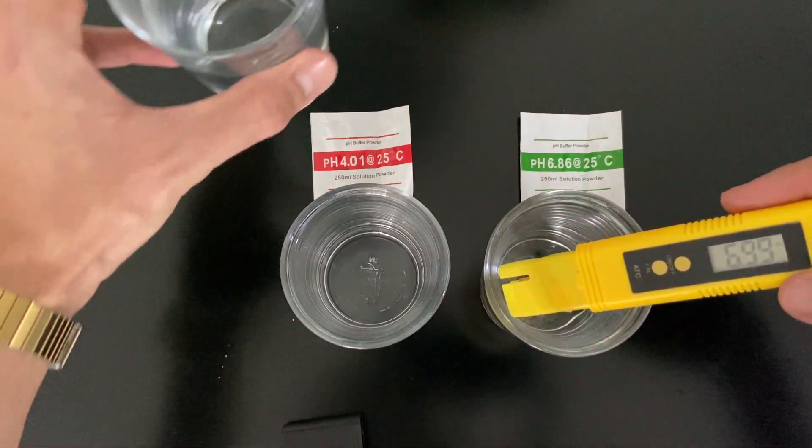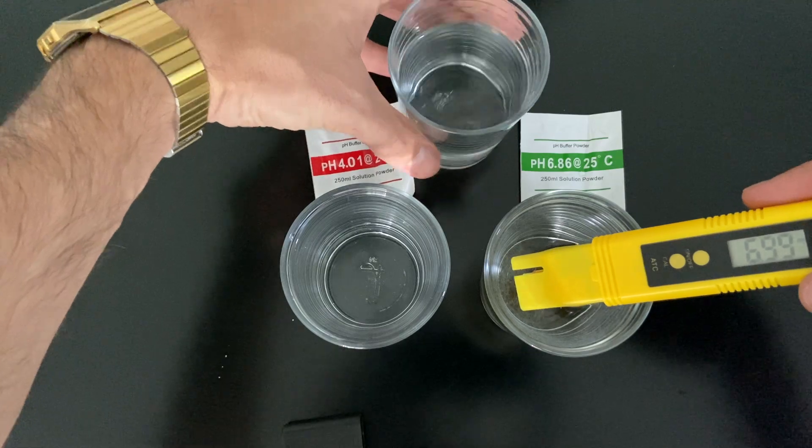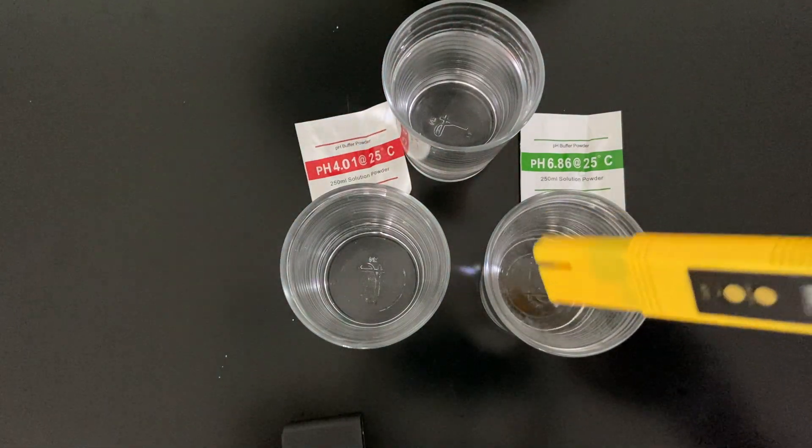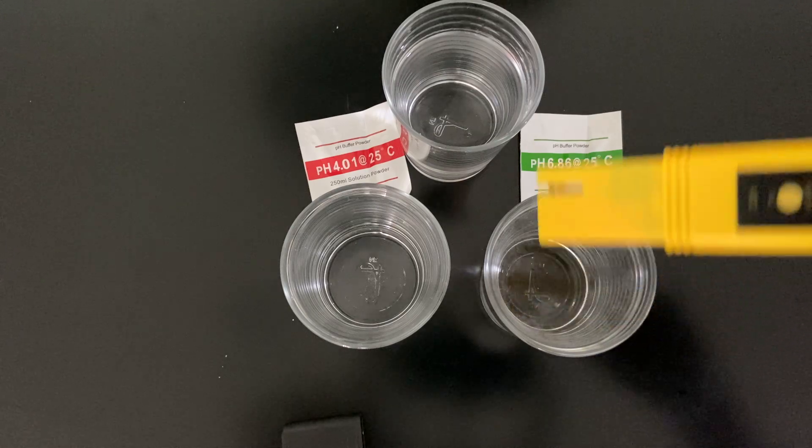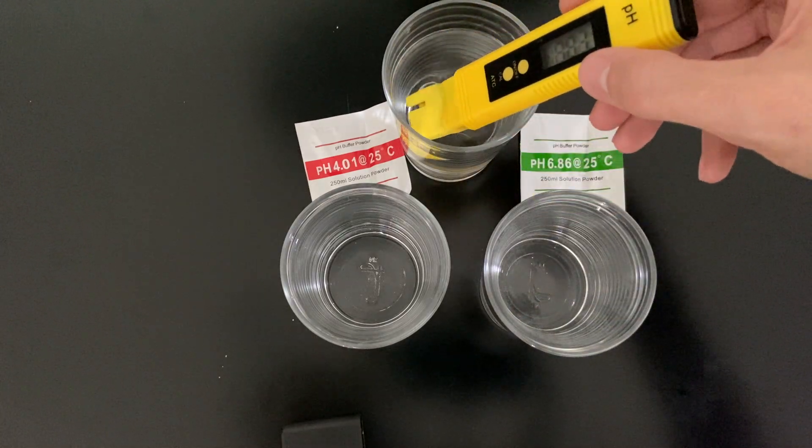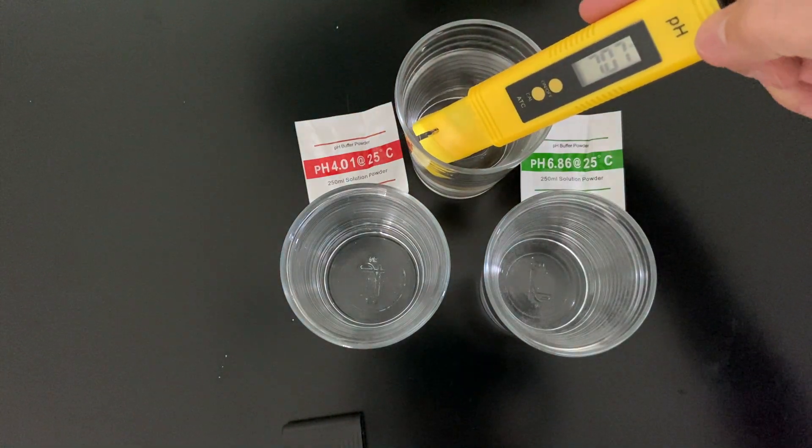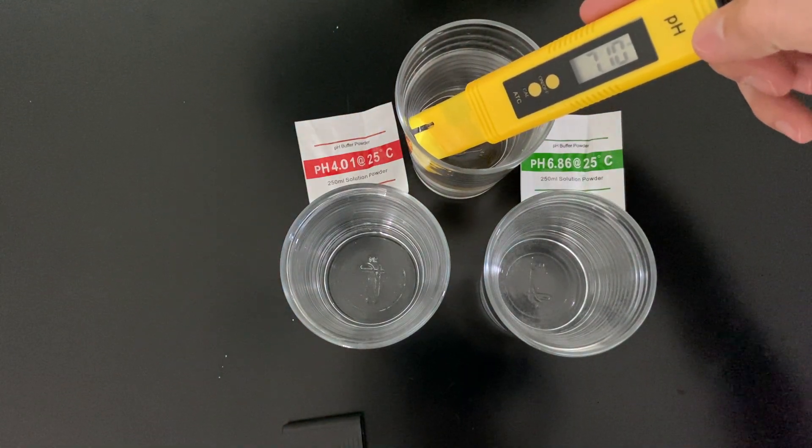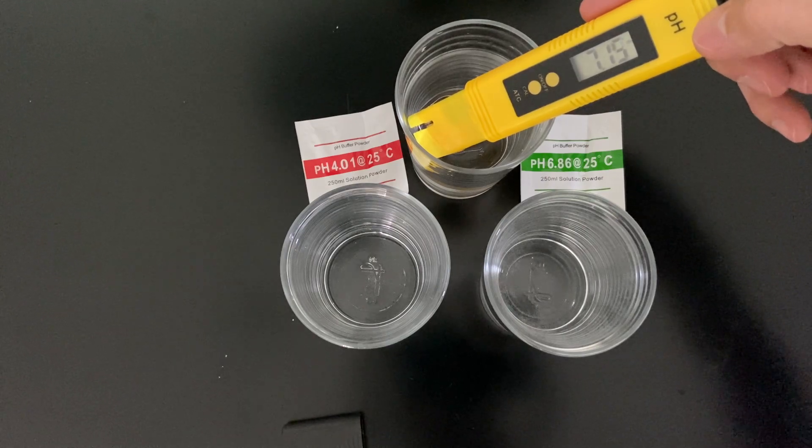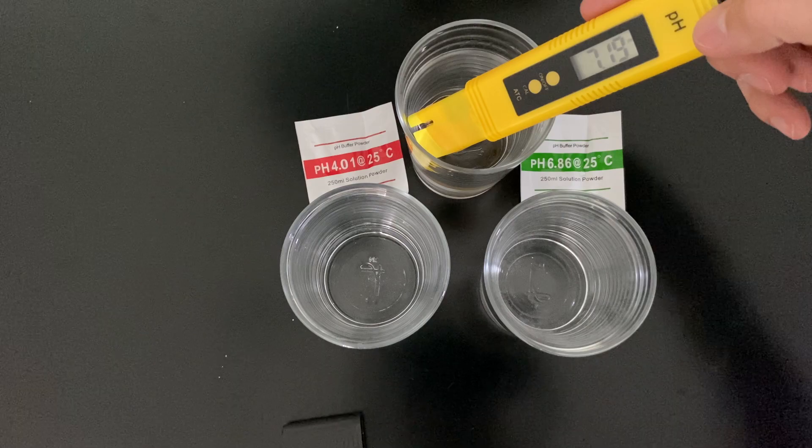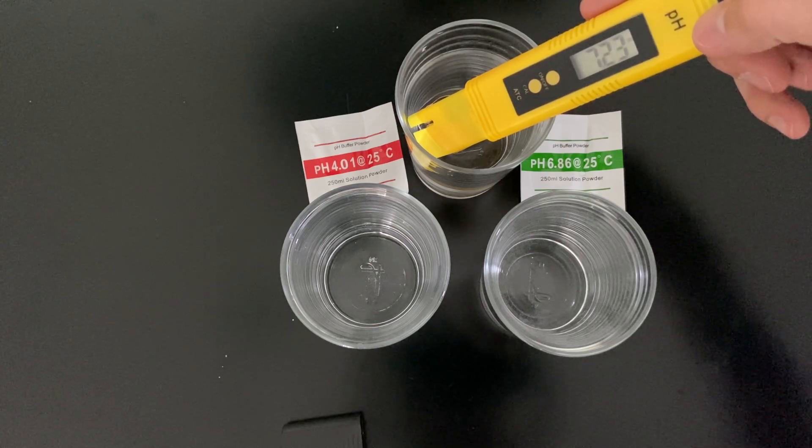Now I took a sample from my tap water here at home. Let's see what is the pH from my water supply. It's showing 7.07. Let's wait for it to stabilize the measurement.